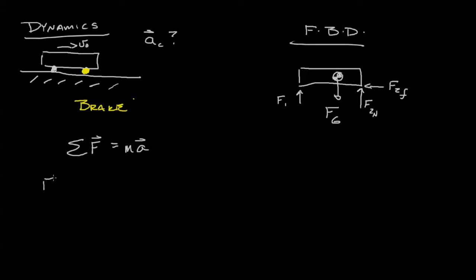And we could rewrite that in vector notation. Force one plus force two plus force of gravity equals mass times acceleration. This will yield one equation in the x direction, one equation in the y direction.